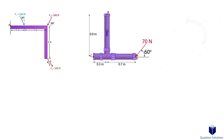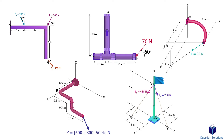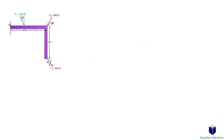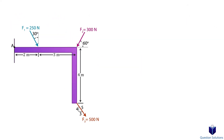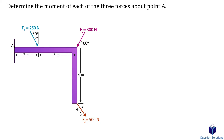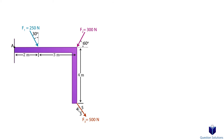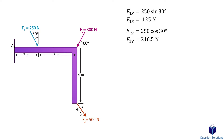Now you will understand these concepts much better with examples, so let's get started. Let's take a look at a 2D moment problem. We need to find the moment each of the three forces creates about a point. The first step is to break each of these forces into X and Y components. Let's start with force F1.